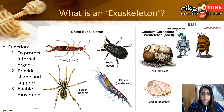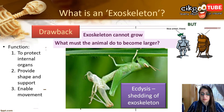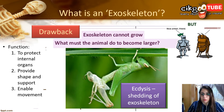A drawback of the exoskeleton is that it cannot grow. So what must an animal do to become larger? It has to undergo a process called ecdysis, which means the shedding of the exoskeleton. To grow, the animal sheds its exoskeleton and can then grow bigger.